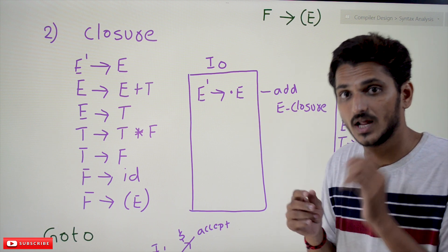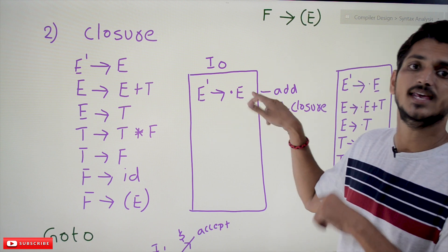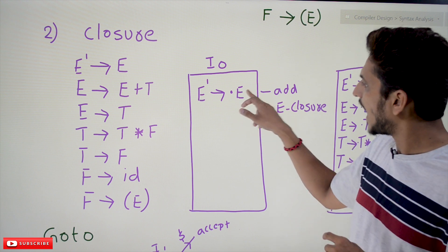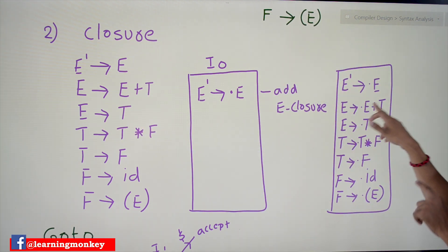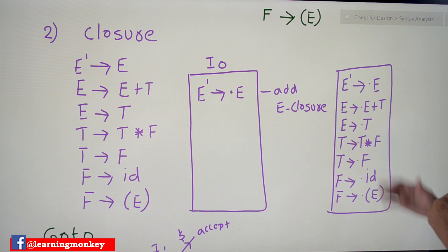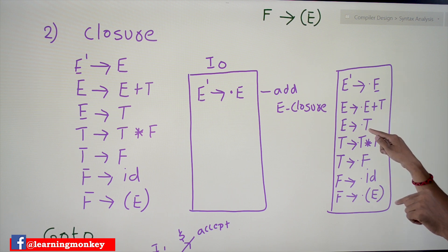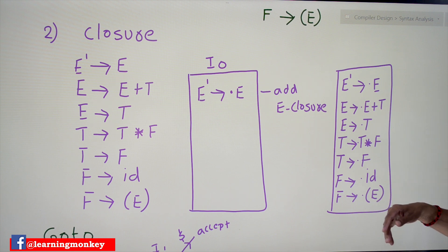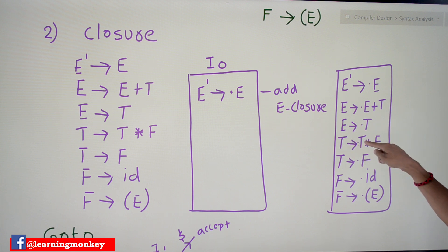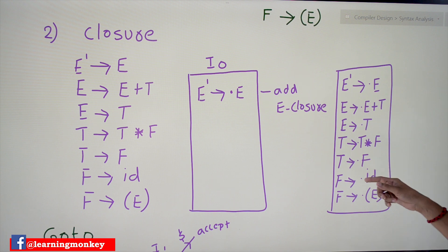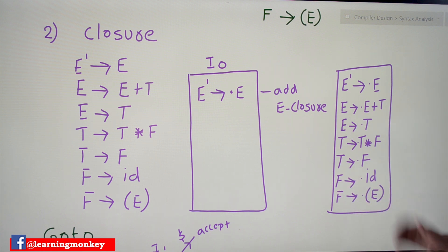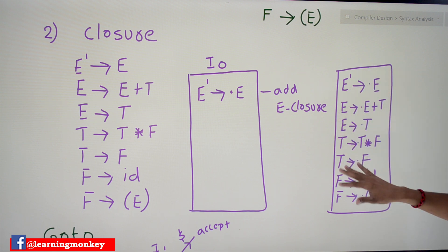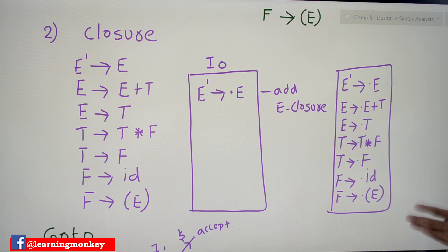Closure means: whenever the dot is present before a non-terminal, you add the productions of that non-terminal. The closure of E means we add all E productions: E → •E + T and E → •T, with the dot placed at the beginning. Now dot is before T, a non-terminal, so we add T productions: T → •T * F and T → •F. Dot is before F, so add F productions: F → •id and F → •( E ). This completes state I₀.